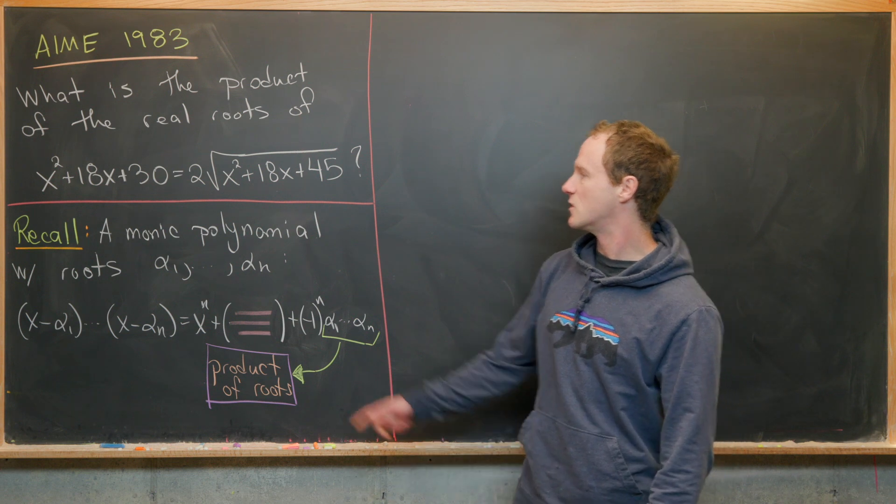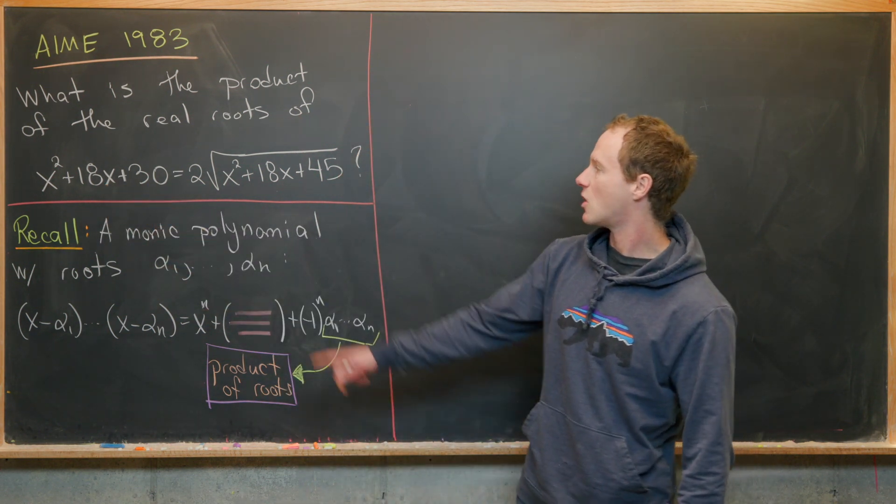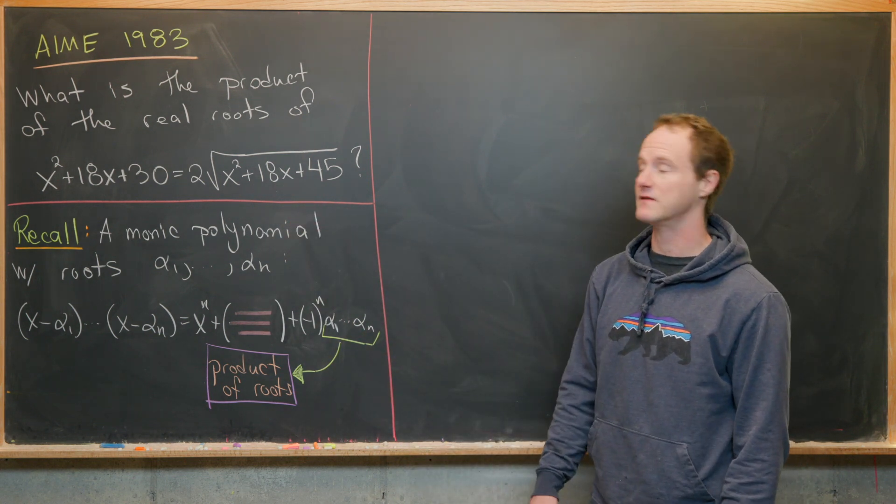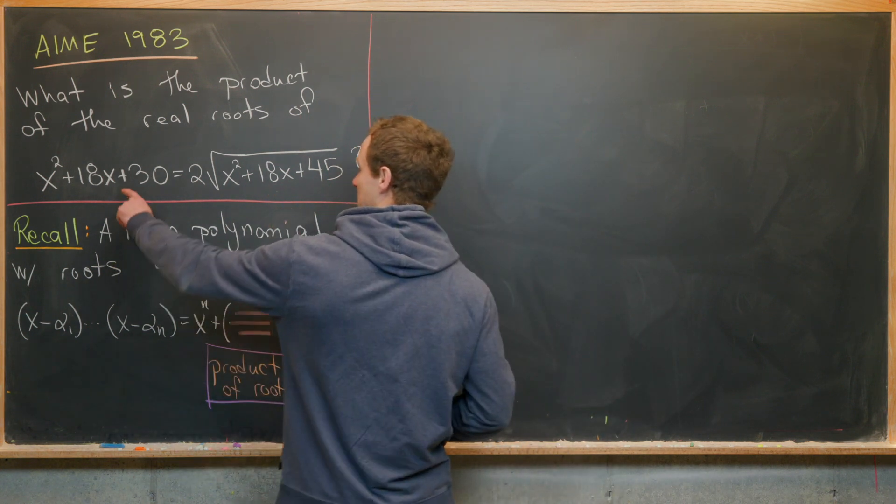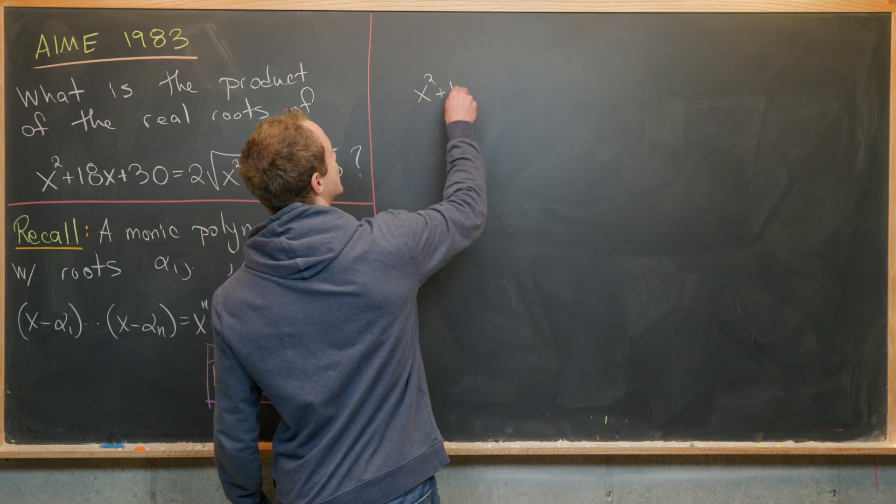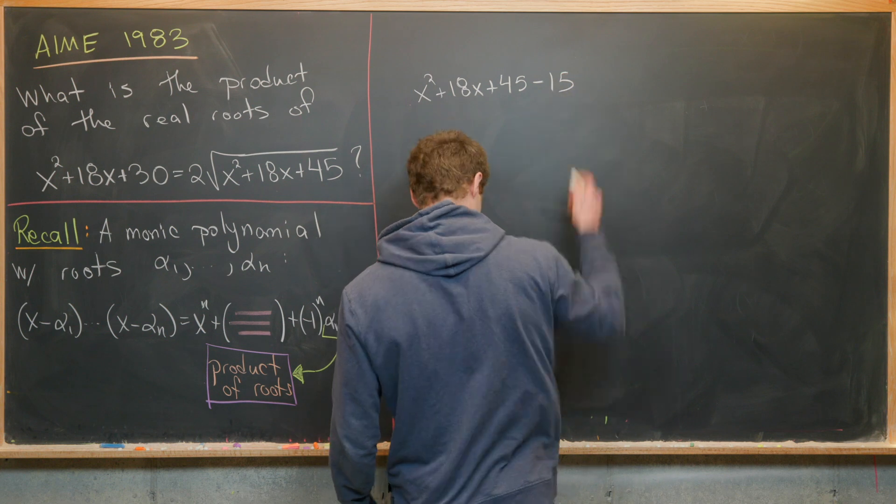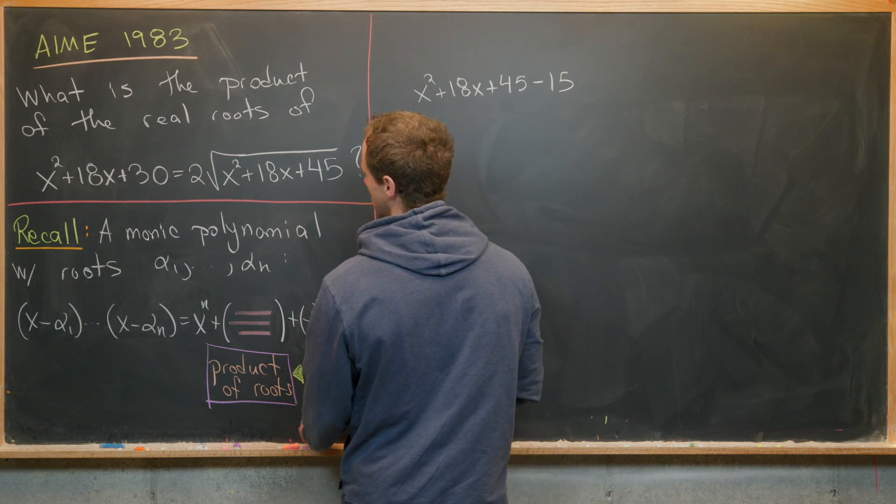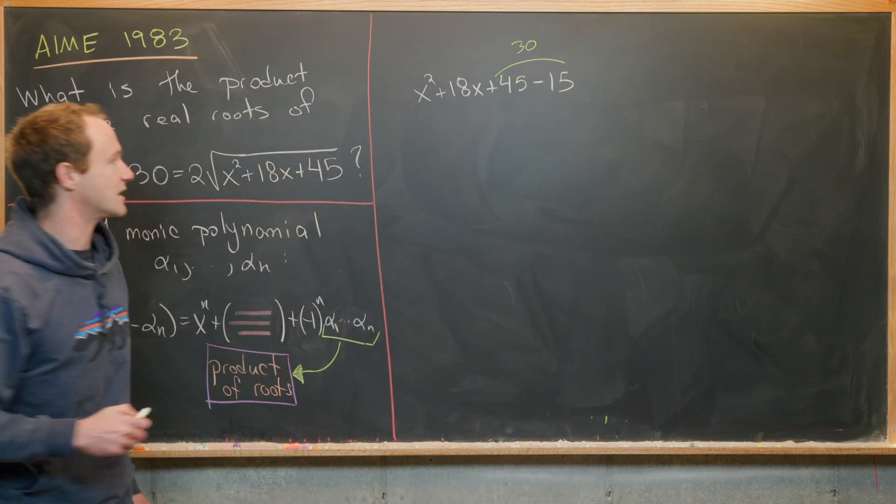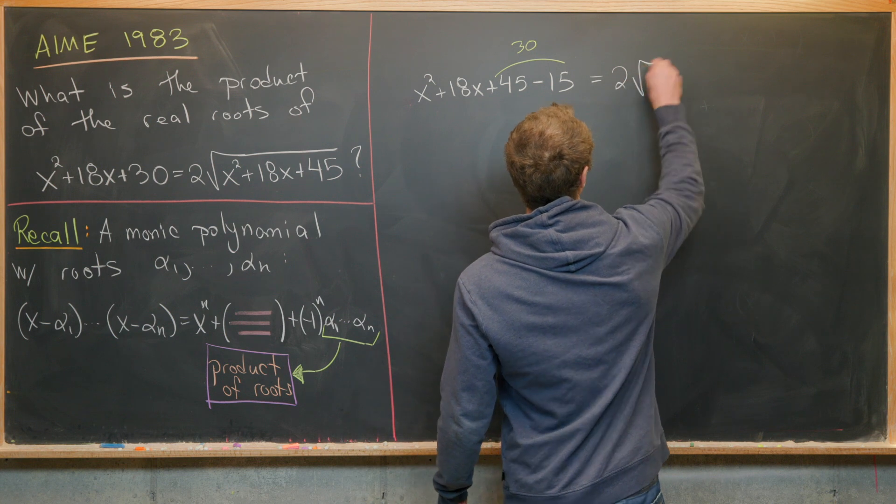It's important to notice that x² + 18x + 30 is almost exactly the same as x² + 18x + 45. In fact, we can rewrite x² + 18x + 30 as x² + 18x + 45 - 15. Because clearly, 45 - 15 = 30, so we're good to go there. We can leave the right hand side as is.